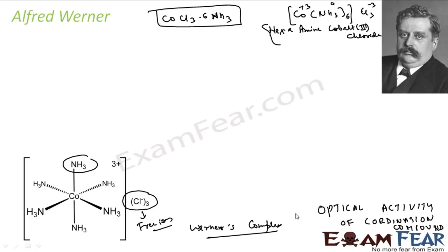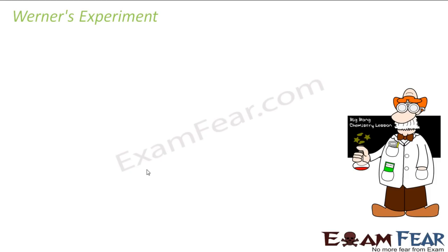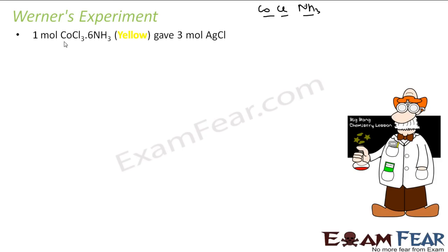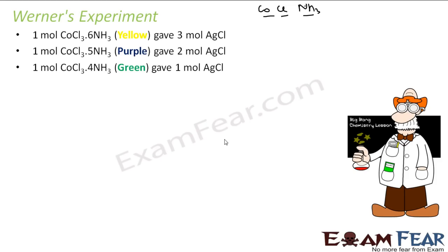Let's look at Werner's key experiment. He took a series of compounds of cobalt chloride with ammonia: CoCl₃·6NH₃ (yellow, three chlorine, six ammonia), CoCl₃·5NH₃ (five ammonia), CoCl₃·4NH₃ (four ammonia), and another isomer of CoCl₃·4NH₃ with a different color. These last two have the same molecular formula but are different isomers.